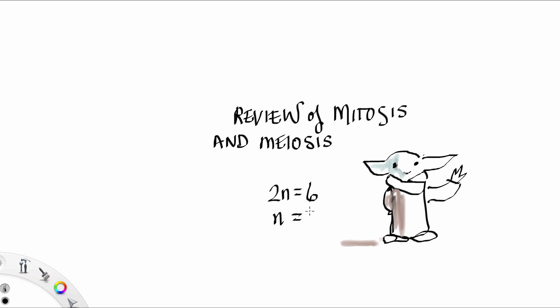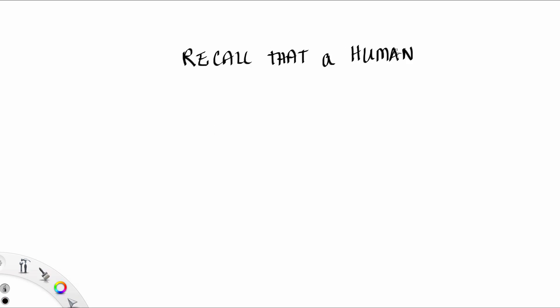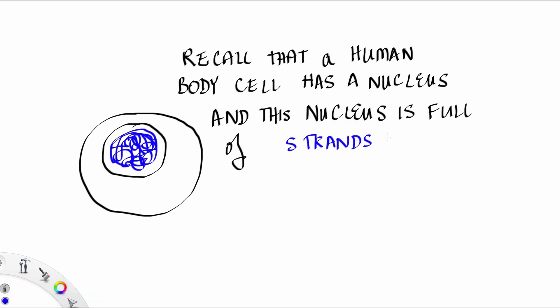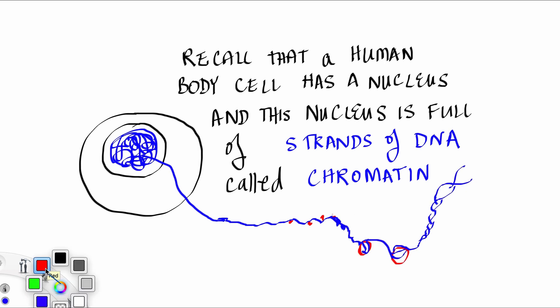This is a review of mitosis and meiosis. Recall that a human body cell has a nucleus and this nucleus is full of strands of DNA called chromatin, and the chromatin is actually a form of the double helix.